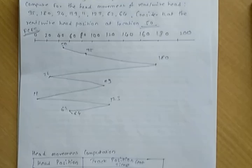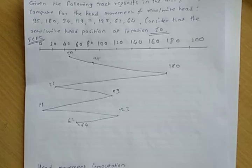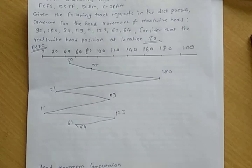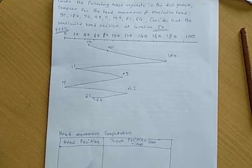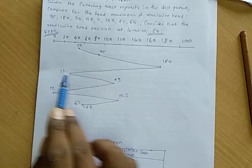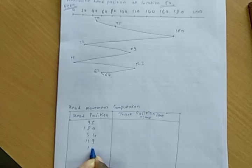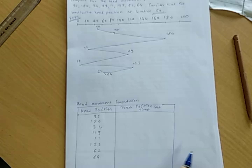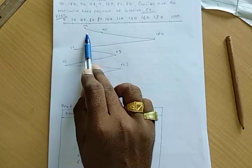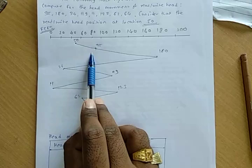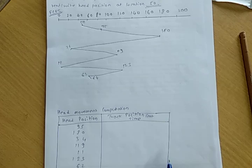This shows the read/write head moving from one location to another. To calculate seek time or average seek time for FCFS, we perform the following calculation. The head positions visited in sequence are: 95, 180, 34, 119, 123, 62, and 64 — a total of eight different positions. From the initial position, the seek time from 50 to 95 is 95 minus 50.